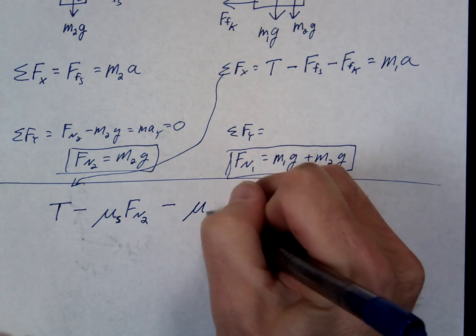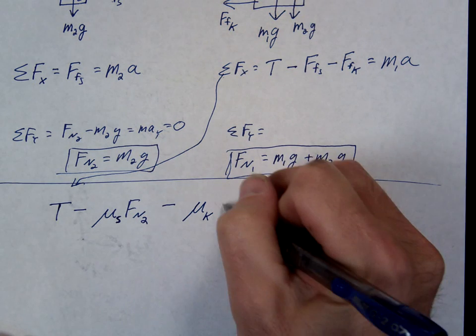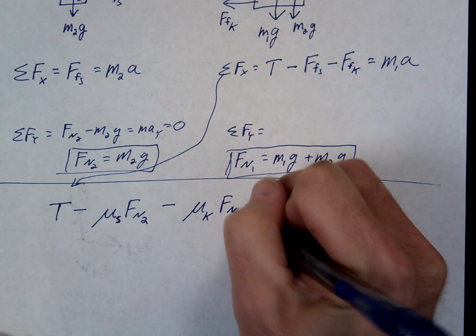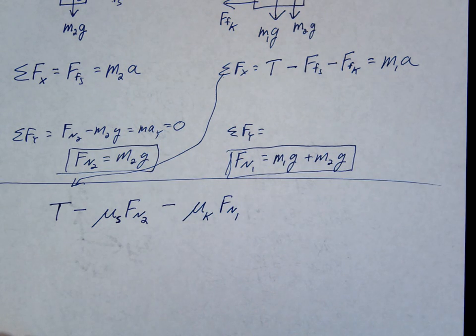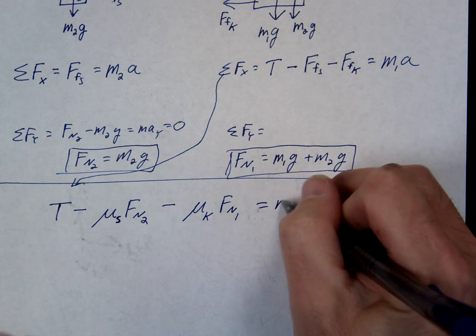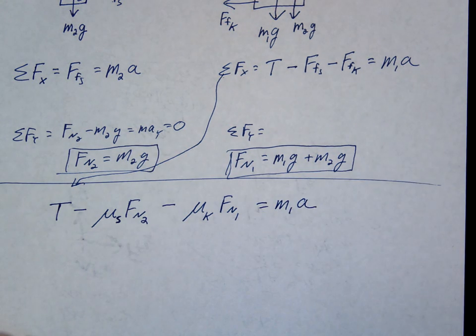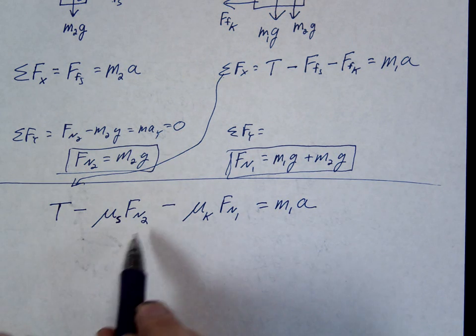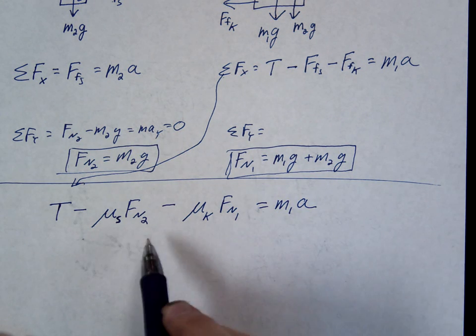Minus mu k. This was the normal force, remember, on block 1. That's going to equal M1a. But we know these normal forces, right? What are these normal forces?